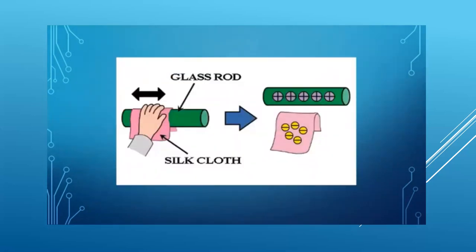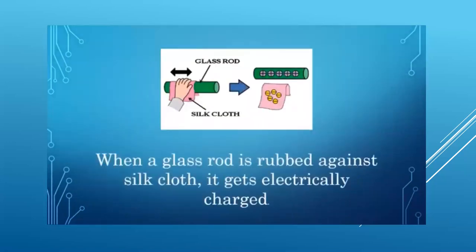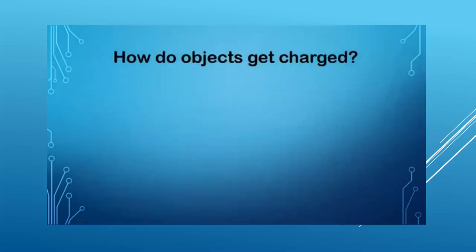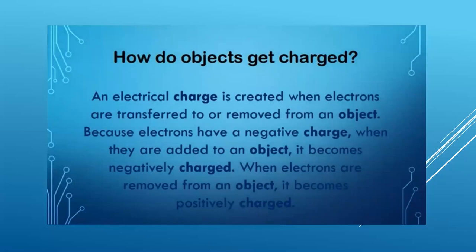What will happen if a glass rod is rubbed on a silk cloth? When a glass rod is rubbed against a silk cloth, it gets electrically charged. How do objects get charged? An electrical charge is created when electrons are transferred to or removed from an object. Because electrons have a negative charge, when they are added to an object it becomes negatively charged; when electrons are removed from an object it becomes positively charged.